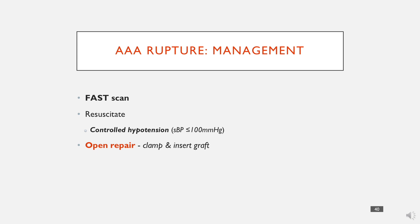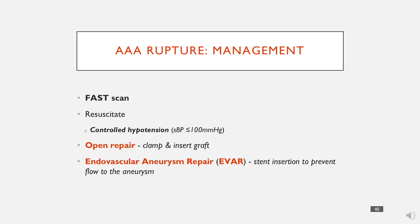There are two main methods of repairing the bleed. The first is open repair — the traditional approach of cutting the patient open, placing a clamp above, inserting a graft inside the abdominal aorta, then releasing the clamp to restore blood flow. The second is endovascular aneurysm repair, called EVAR, where a stent is inserted endovascularly to prevent blood flow into the aneurysm.